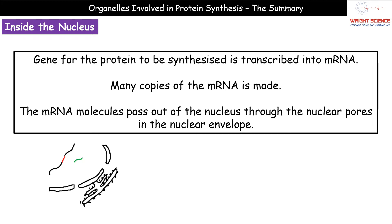Those mRNA molecules are able to pass out of the nucleus through the nuclear pores in the nuclear envelope. If we have a look at the diagram — we are inside the nucleus here. This is our DNA strand, the black bit, and that little red bit there is going to be the gene that we actually want to transcribe. So we're going to go through the process to transcribe the gene to make our little bit of mRNA. That's our mRNA strand for that particular gene.